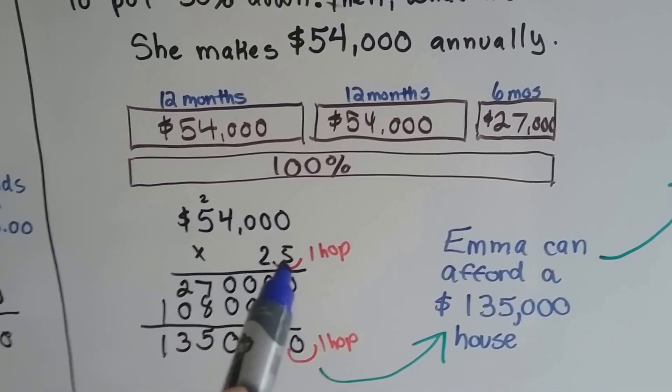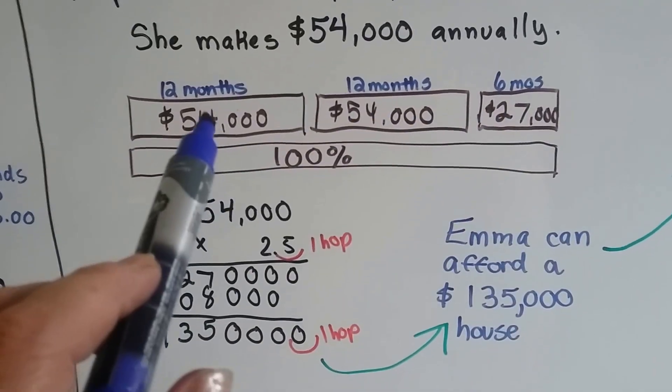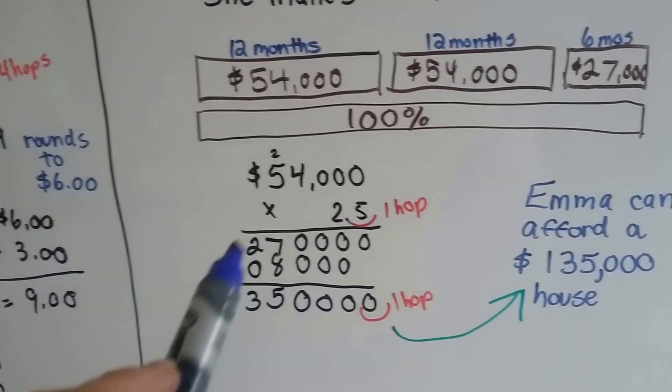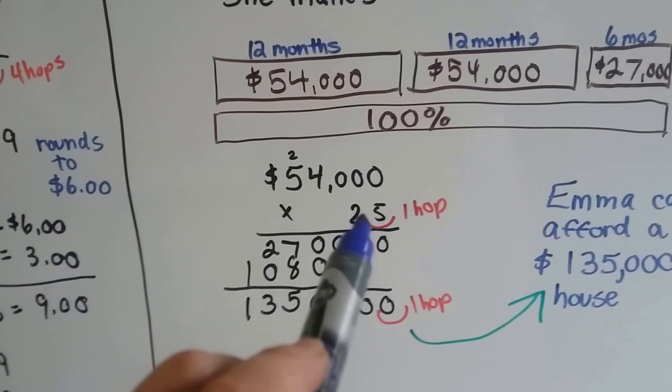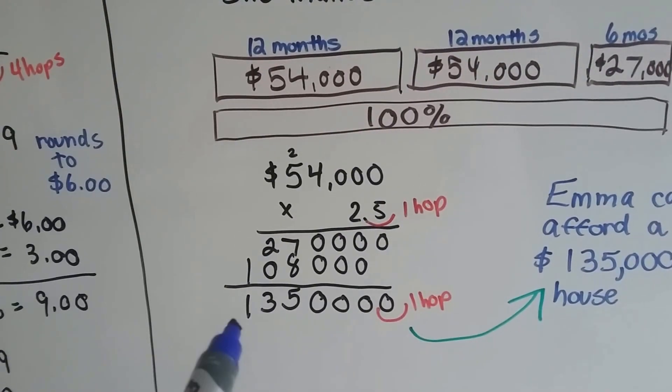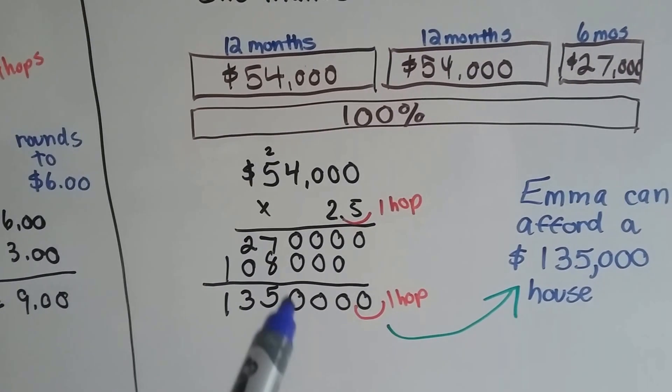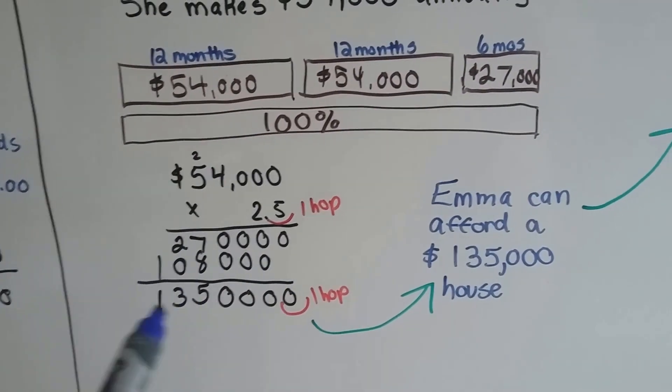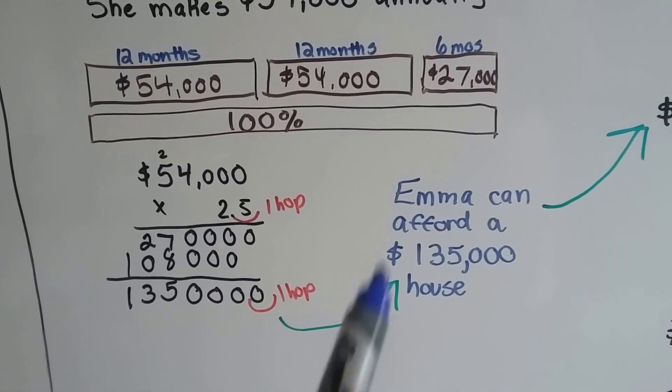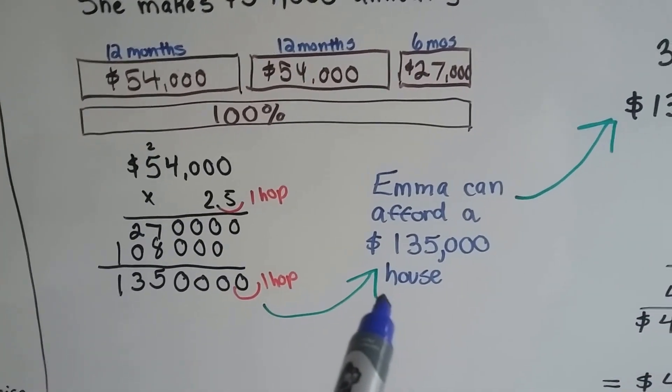$54,000 times 2.5, or we could have added it up. After doing our multiplication and counting our hops in the 2.5, we come up with $135,000 when we multiply it and add it up. So, we know she can afford a $135,000 house.